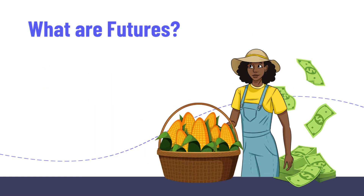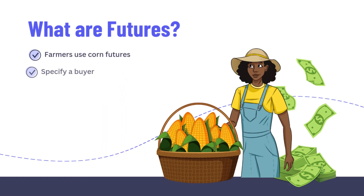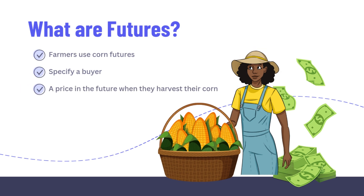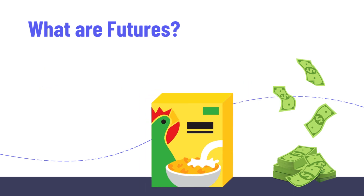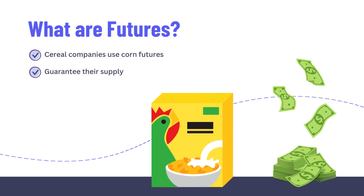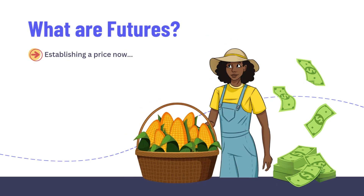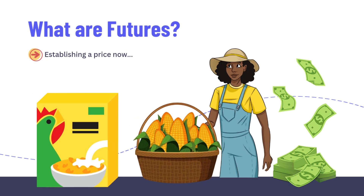There are many different types of futures. Farmers use corn futures to specify a buyer and a price in the future when they harvest their corn, and cereal companies like Kellogg's want to make sure they will have corn to make cornflakes cereal. Establishing a price now for a transaction in the future helps the buyer and seller better manage their businesses.